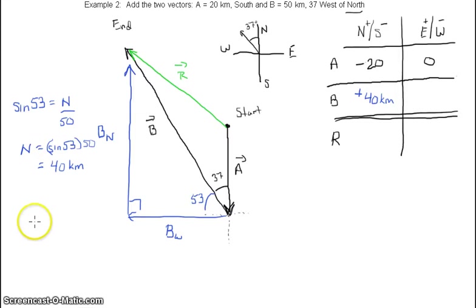If we find the west part, we would then have cosine of 53. This would equal west divided by 50, so 50 cosine 53 would be 30 kilometers and that would be your west component. So west in this case was negative, so that's going to be 30 kilometers to the west.